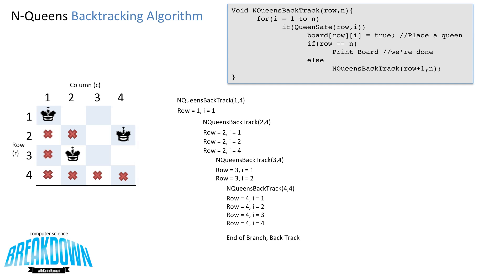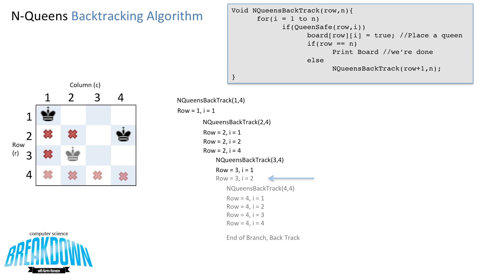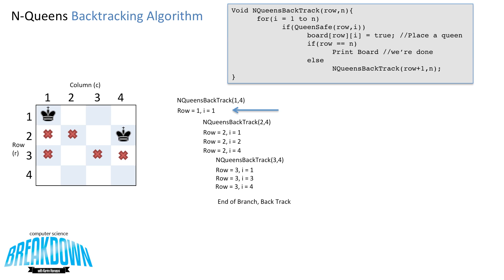We need to backtrack to the previous level. Instead of placing a queen at row 3, column 2, we try row 3, column 3 — not safe. We increment i and check row 3, column 4 — also not safe. So we've reached the end of this branch again. Since we've exhausted every possibility for row 2, we actually have to backtrack one level further to the very top level, and now increment i by 1 to try the algorithm again.